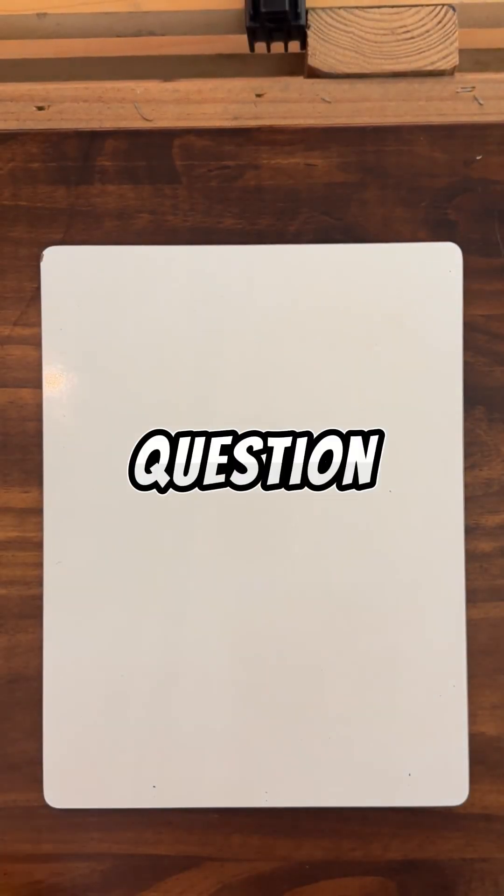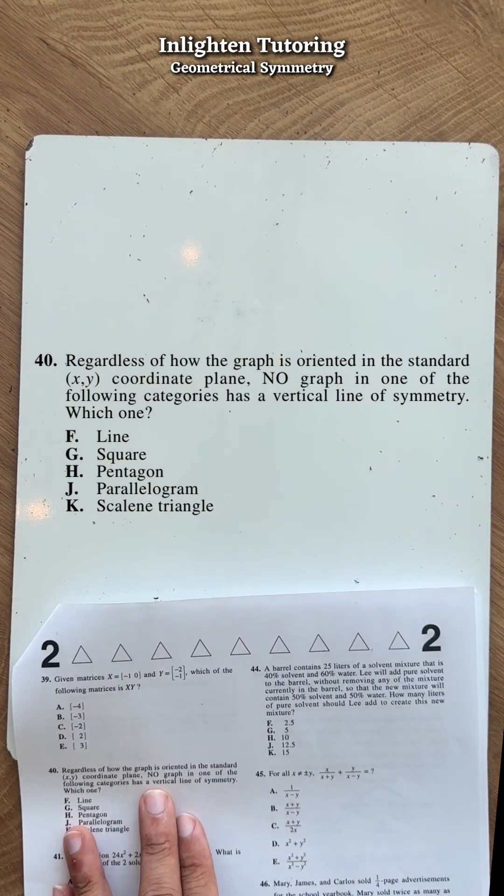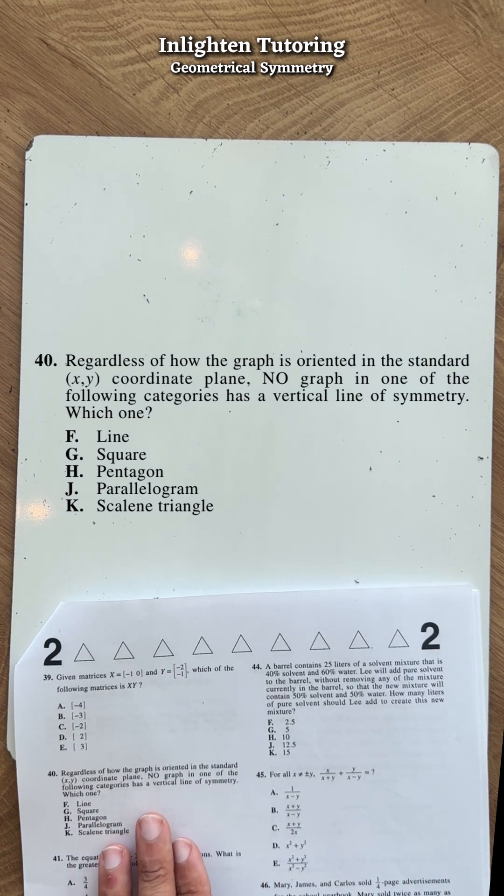You're taking a big math test and you get a question like this: Regardless of how the graph is oriented in the standard xy coordinate plane, no graph in one of the following categories has a vertical line of symmetry. Which one?